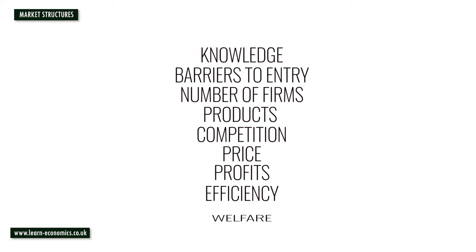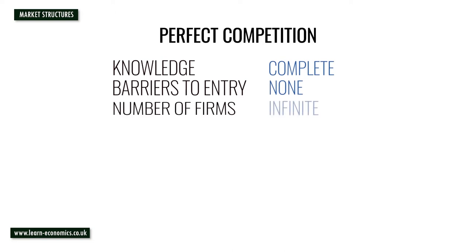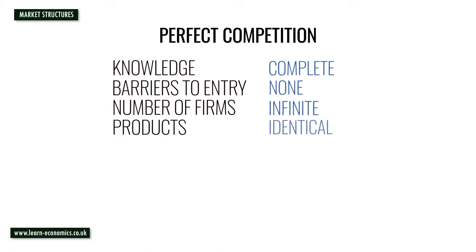For perfect competition, knowledge is complete. There are no barriers to entry. There are infinite numbers of competitive firms. Products are identical. Firms are price takers. Efficiency levels and welfare are also key considerations.